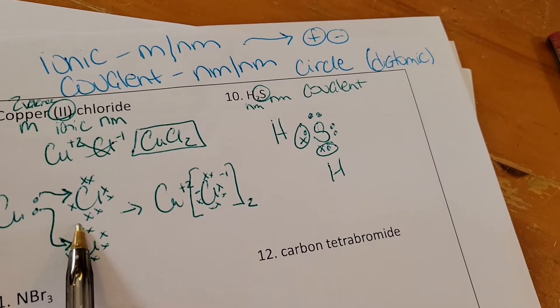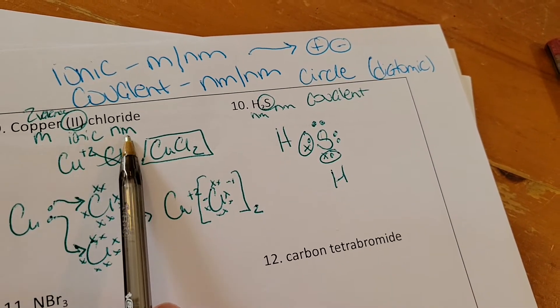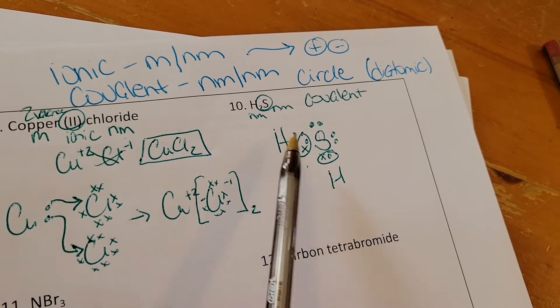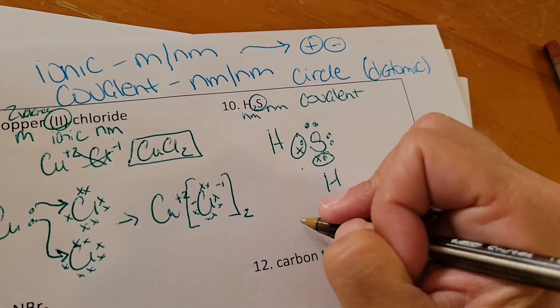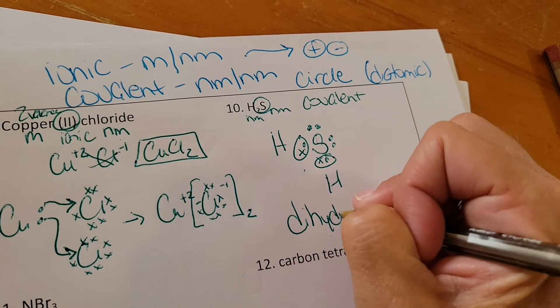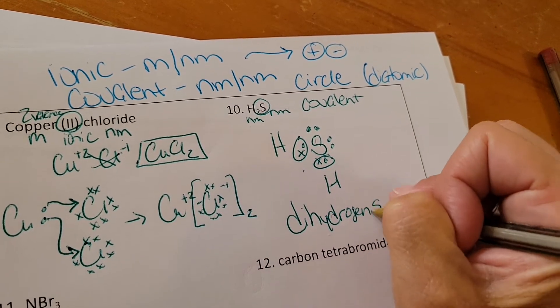These are arrows because it's ionic, metal and non-metal. These are circles because it's two non-metals. And then to name it, it'd be dihydrogen sulfide.